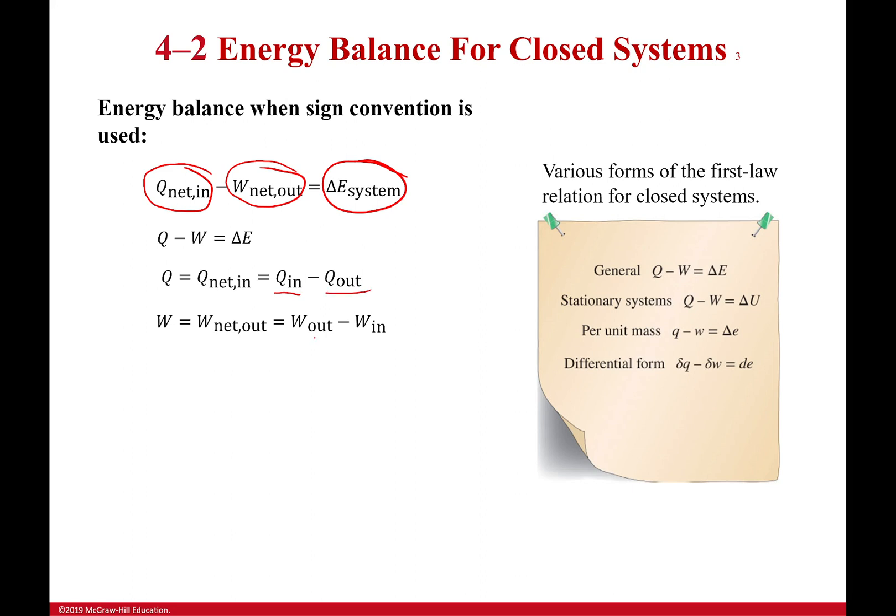Net work output is the work out minus the work in. Because remember we're saying the work is positive if it's going out, and negative if it's going in because I'm having to do work there. Now, you can do your own sign conventions here. There's a lot of ways you can write these things and it still works out fine. Just be very careful. These are going to probably work out really well for you for most of our equations.